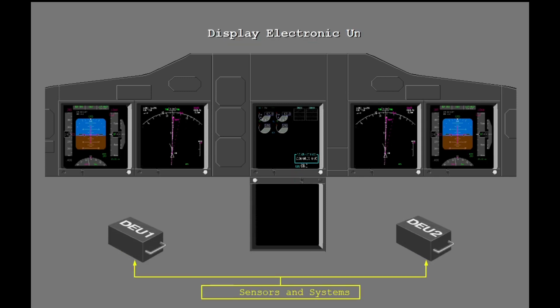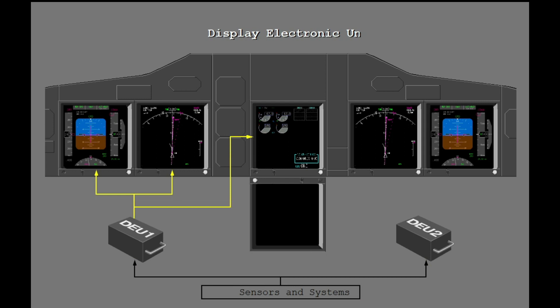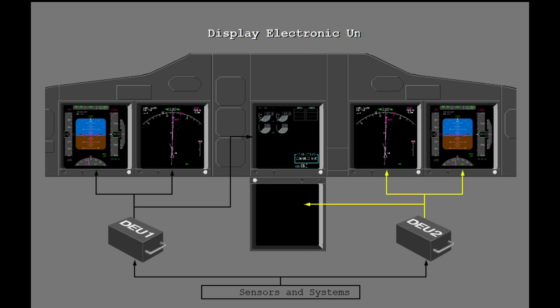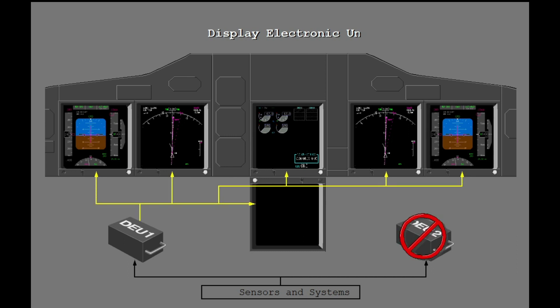Two Display Electronic Units, or DEUs, receive data from sensors and airplane systems. The DEUs supply these data to the DUs. Normally, DEU 1 supplies display data to the Captain Outboard, Captain Inboard, and Upper DUs. DEU 2 supplies data to the First Officer Outboard, First Officer Inboard, and the Lower DUs. If necessary, one DEU can supply data to all six DUs. This is discussed later in the lesson.